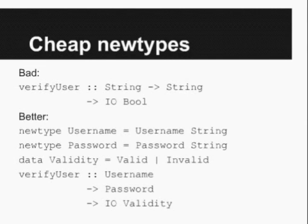The better version uses newtype wrappers. Now that we have a newtype for Username and a newtype for Password, it's impossible to accidentally pass in the wrong information — if you try to pass the password as the first parameter, the compiler will stop you. Instead of returning a plain Boolean, we now have a data type called Validity, which gives much more information about what's being returned. And later on, if you're passing this Validity parameter around, it's virtually impossible to confuse it with some other boolean used for a completely different purpose.